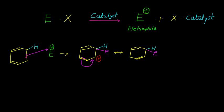There is a shift of this positive charge from this carbon atom to that carbon atom. Again we can write one more resonance structure. The lone pair which is present in this pi bond will donate in this way, and now we can write the next resonating structure.